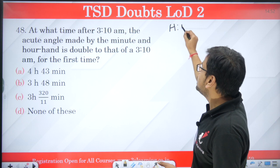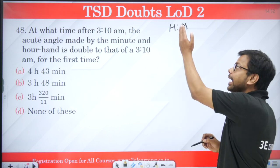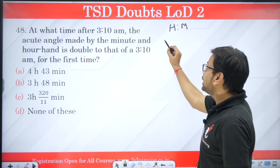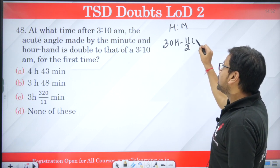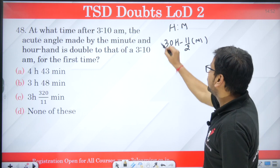If the time is h hours m minutes, then the angle between them is 30h minus 11 by 2 m. You know this case here with the mod side.